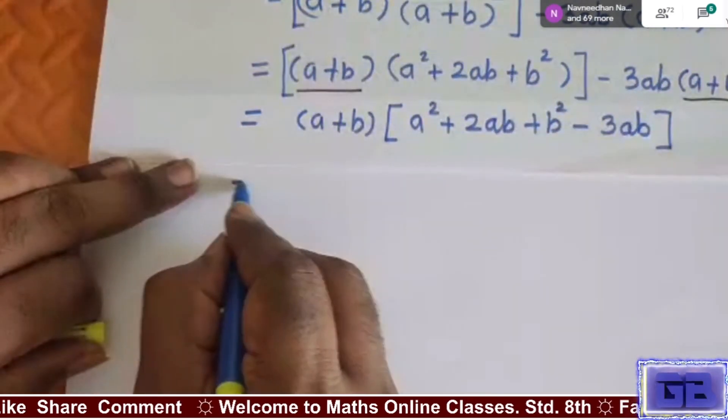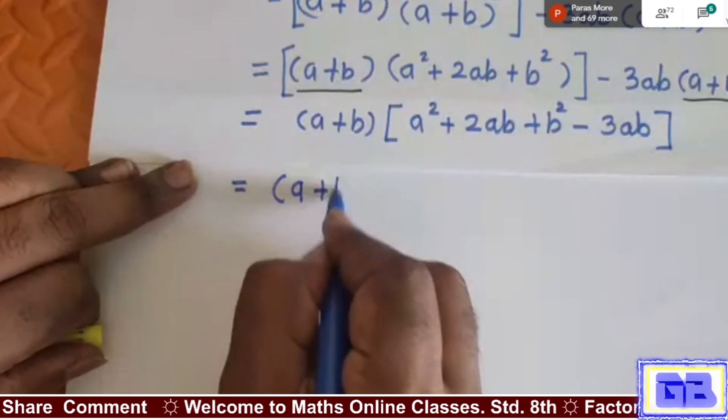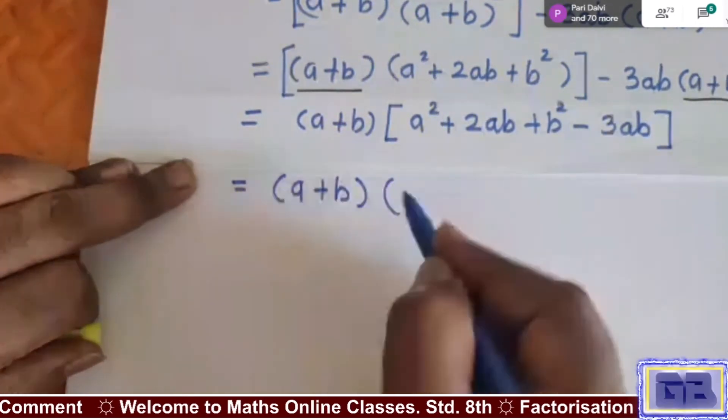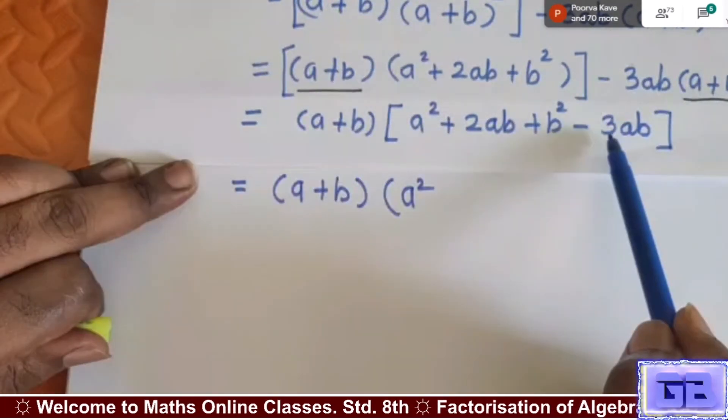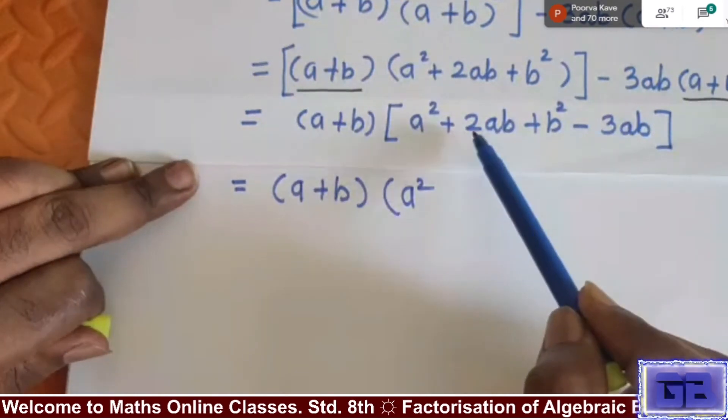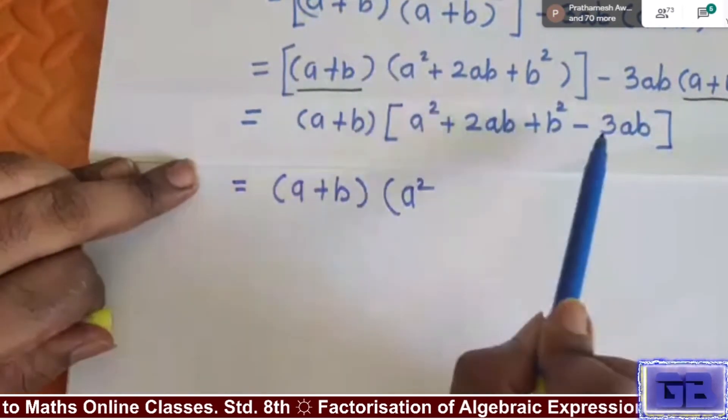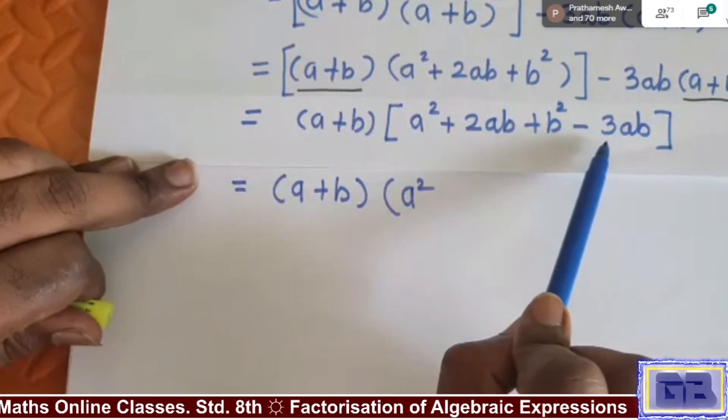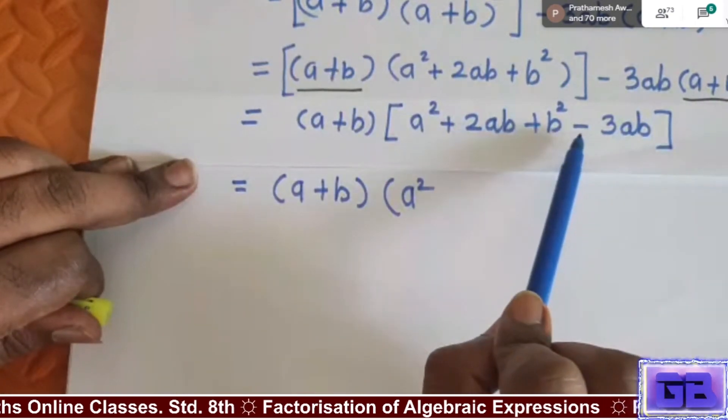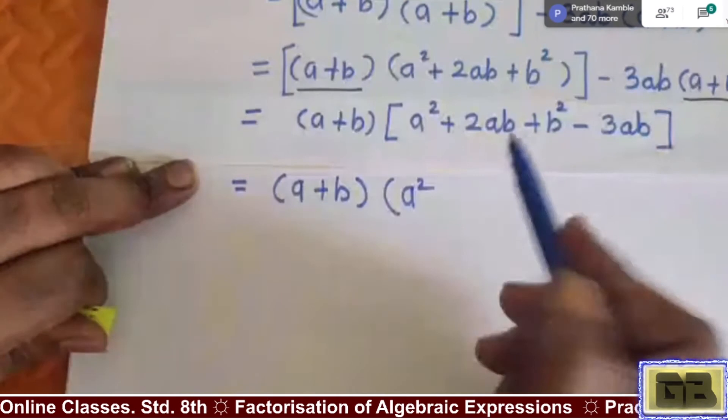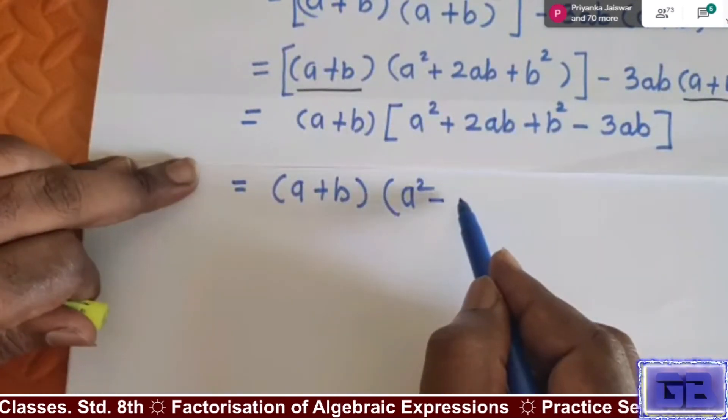As here negative sign is there, this bracket we will write down as it is: (a+b). Now I will change the bracket: a², now minus. 3 plus 2 we have to subtract: 3 minus 2. But here bigger number contains minus sign, therefore we have to give minus sign here. 3 minus 2 is 1, so no need to write 1, only write down ab plus b².